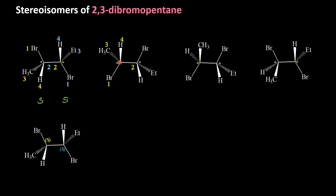For the second molecule, CIP rules give bromine as 1, the group as 2, methyl as 3, and hydrogen as 4. Again, the fourth group is towards the observer, so we find the configuration and reverse it. Moving from 1 to 2, 2 to 3 is counterclockwise, so we write it as R. On the other chiral carbon, the fourth group is also towards the observer; moving from 1 to 2, 2 to 3 is counterclockwise, so we reverse and write R.